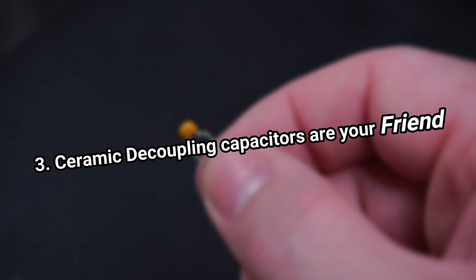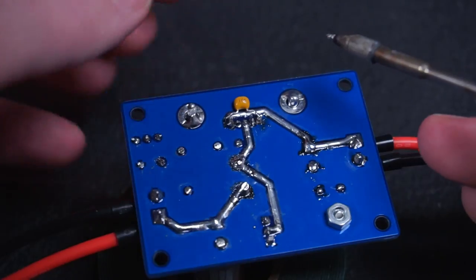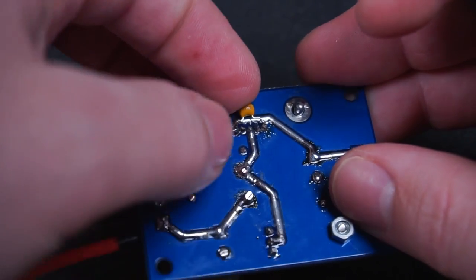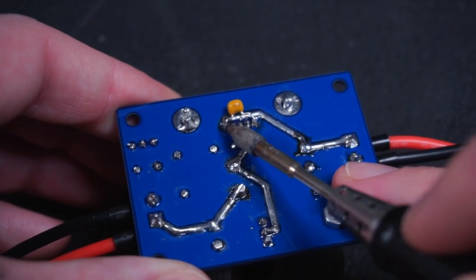Tip 3: Ceramic decoupling capacitors are your friend. We covered this at the start of the video. Be prepared to spend many hours experimenting with adding additional decoupling capacitors in an effort to further reduce noise in your circuit.